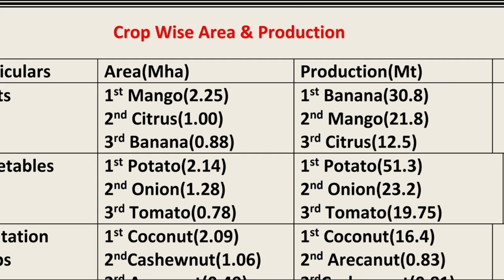Now for crop-wise area and production: among fruit crops, mango has the maximum area with 2.25 million hectare, citrus is second with 1 million hectare, and banana is third with 0.88 million hectare. In terms of fruit production, banana is first with 30.8 million ton, mango is second with 21.8 million ton, and citrus is third with 12.5 million ton.